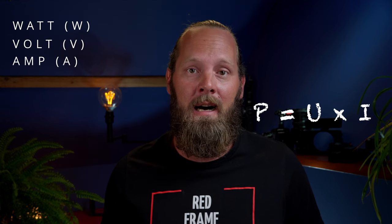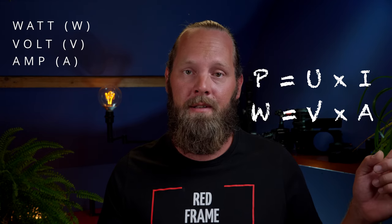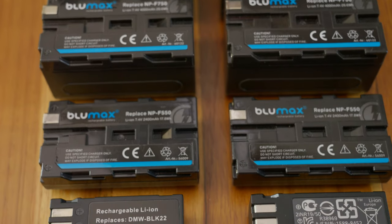Let's get some basic physics out of the way. There are a few terms I'm going to be using throughout the video: power in watts, electrical potential or potential difference in volts, current in amps, capacity in amp hours, and energy in watt hours. In order to understand power and how the different terms relate to each other, we need the following equations. P equals U times I, where P is power in watts, U is electrical potential in volts, and I is current in amps. The next equation is Q equals I times T, where Q is amp hours, I is current in amps, and T is time. So amp hours equals amps times time.